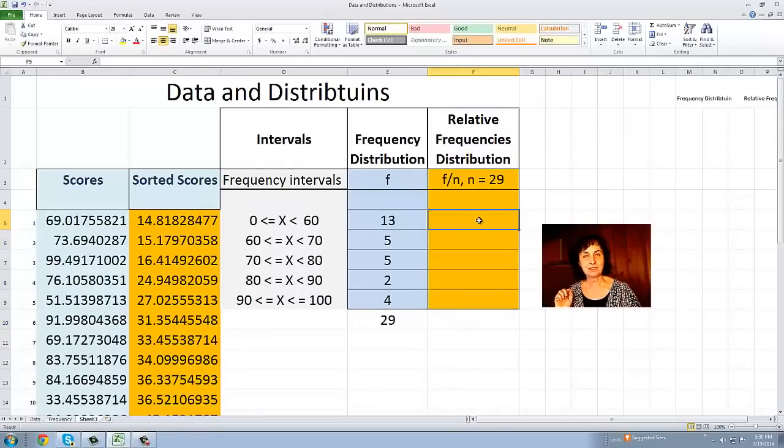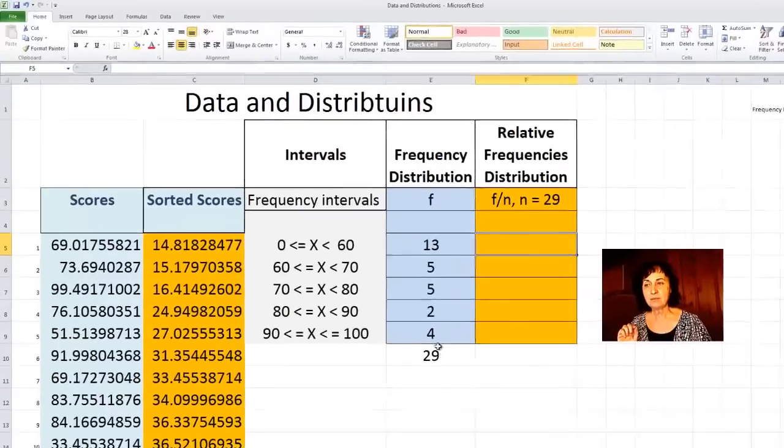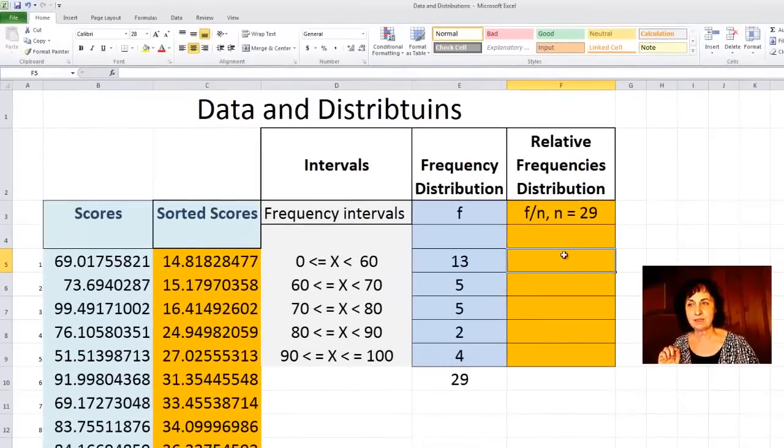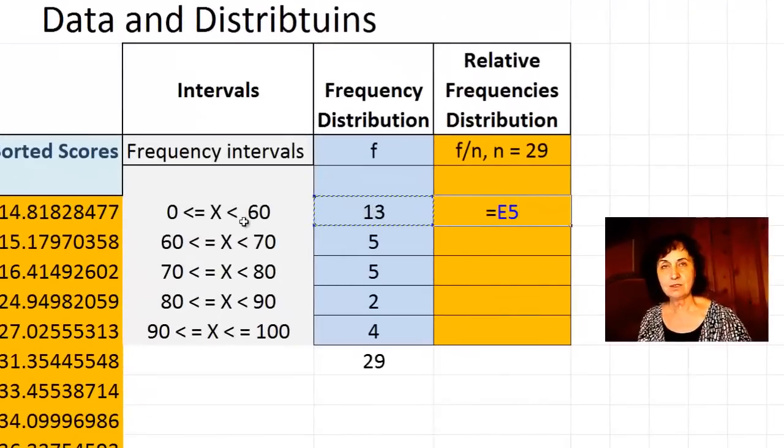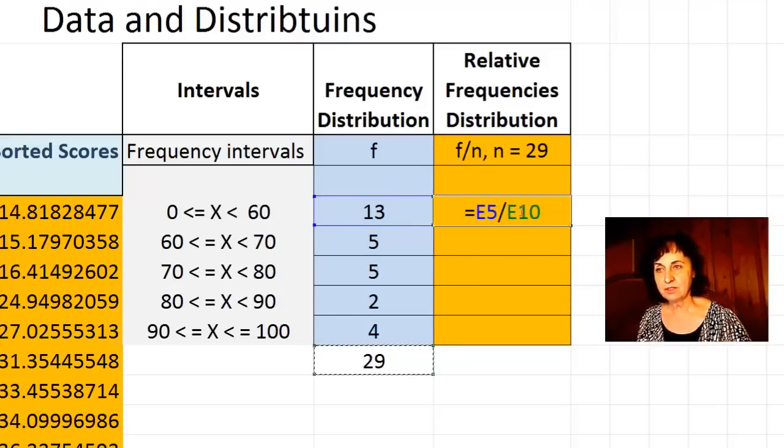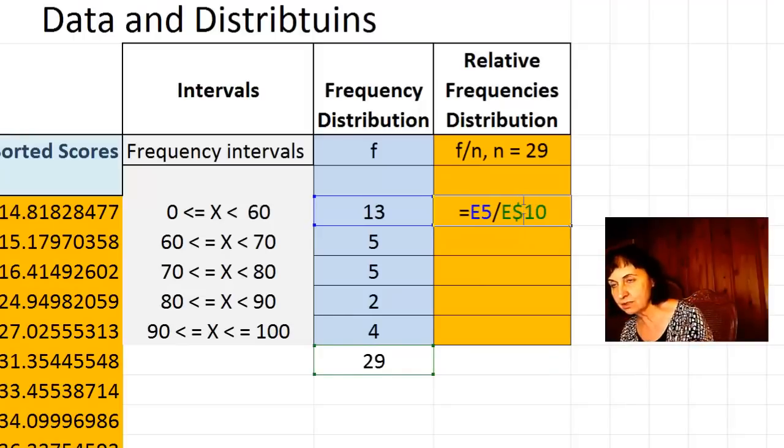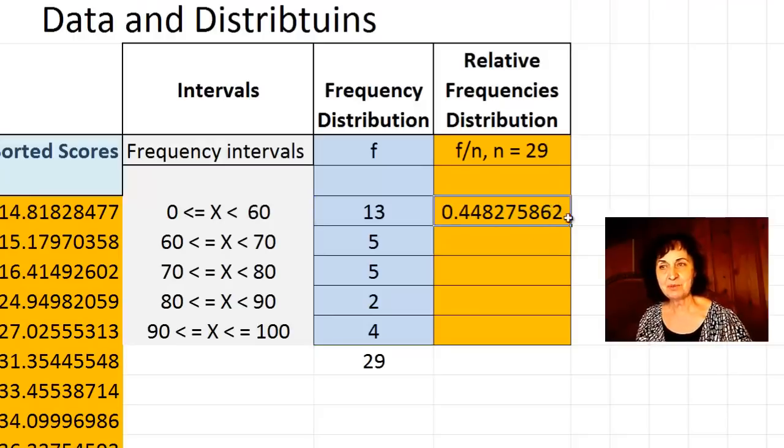One more distribution I'll consider today is relative frequency distribution. This is the frequency in each interval divided by the total number of cases, which in our case is 29. So I have the frequency in the first interval divided by the total number of cases. Please don't forget to put a dollar sign to keep this cell constant as we copy the formula. Let's copy the formula.